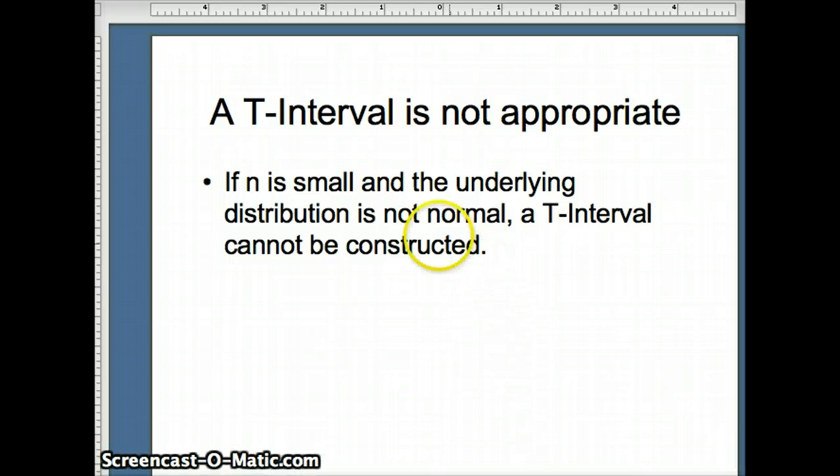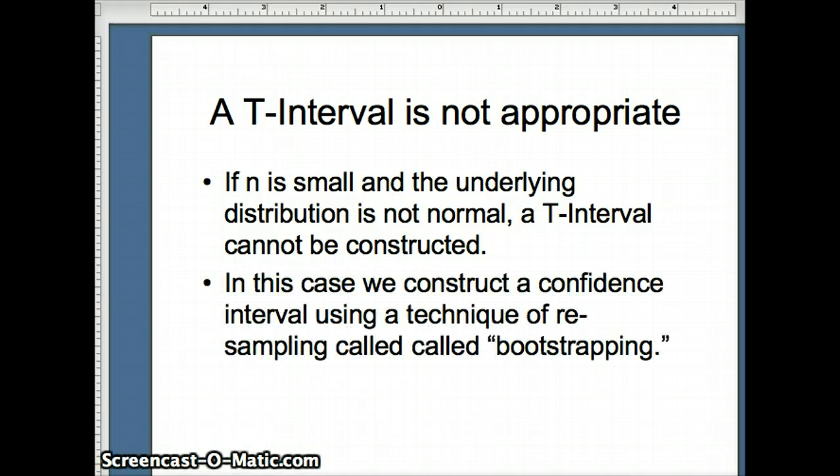But it's not appropriate if we have a small dataset and the underlying dataset is not normal. So in that instance, we cannot use a t-interval and we need a different strategy. So in this case, we're going to use something called bootstrapping. We're going to construct a confidence interval using this technique of resampling.